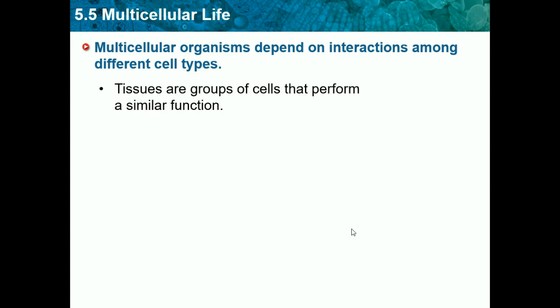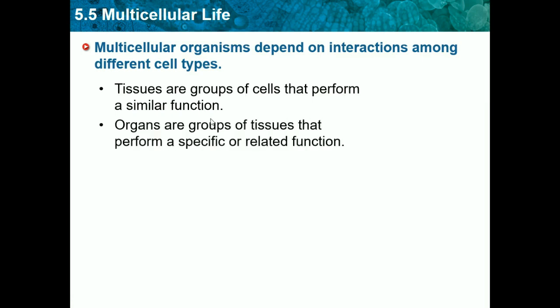We can classify cells into many different groupings — there's a hierarchy of how we classify them. The basic unit is a cell, the basic unit of life. Going up a step, we get tissues, which are groups of cells that perform a similar function. Cells combine and work together to perform a similar task. With multiple tissues we get an organ, which is a group of tissues that perform a specific or related function.